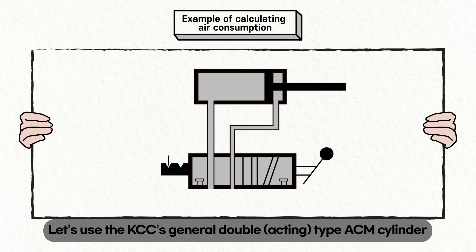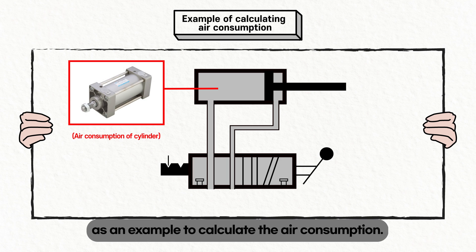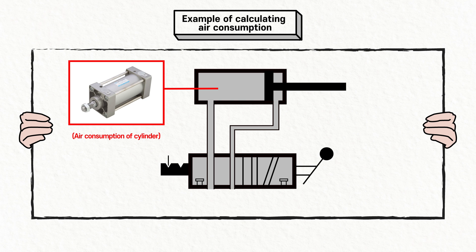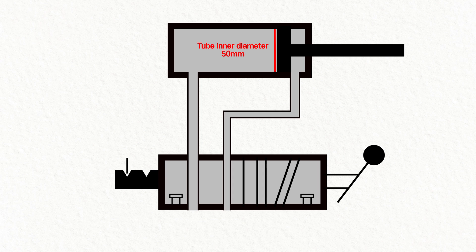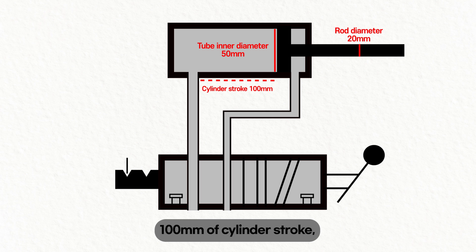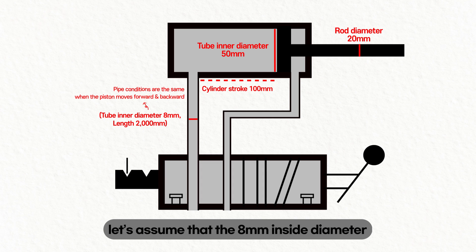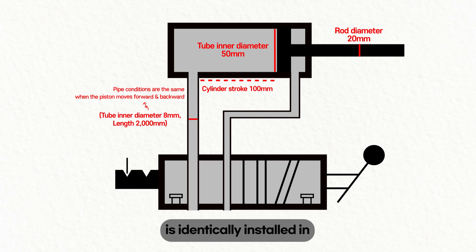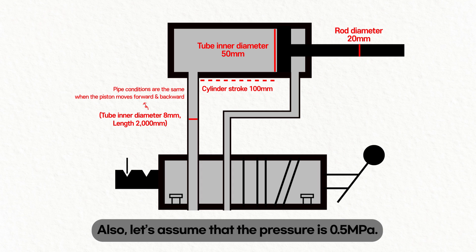Let's use KCC's general double-acting ACM cylinder as an example. The ACM cylinder has a 50 mm bore diameter, 20 mm rod diameter, and 100 mm cylinder stroke. For convenience of calculation, let's assume that an 8 mm inside diameter, 2-meter nylon tube is identically installed in both forward and reverse directions. Also, let's assume that the pressure is 0.5 megapascals.